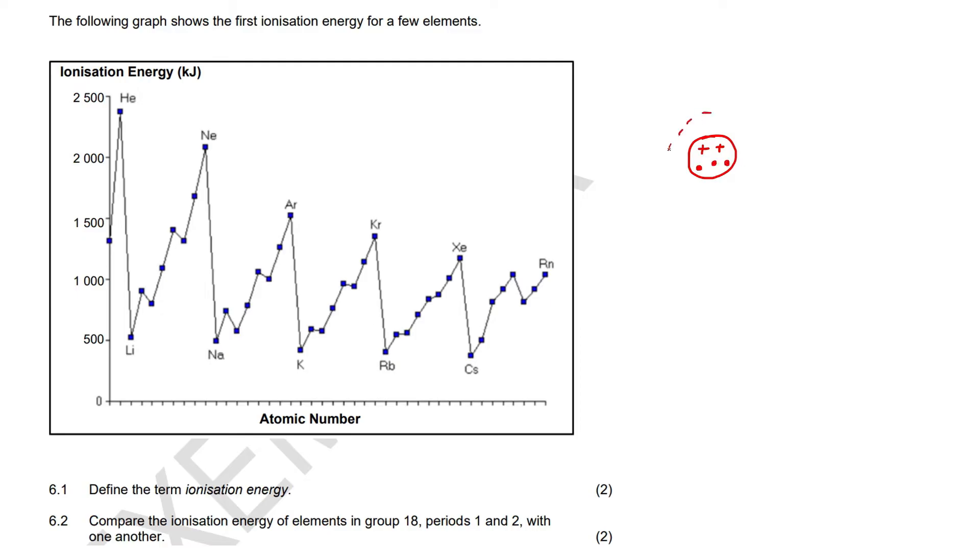Then on the outside it's got energy levels and in those energy levels we have electrons. Let's say for example the electrons are green, so those electrons are negative. Then let's say on the outside here we've got three. Remember that electrons are negative.